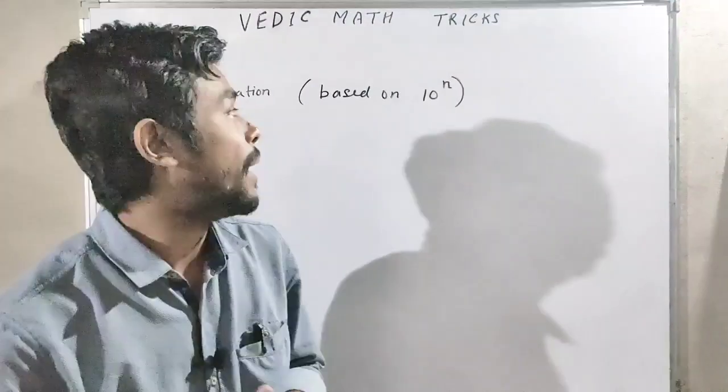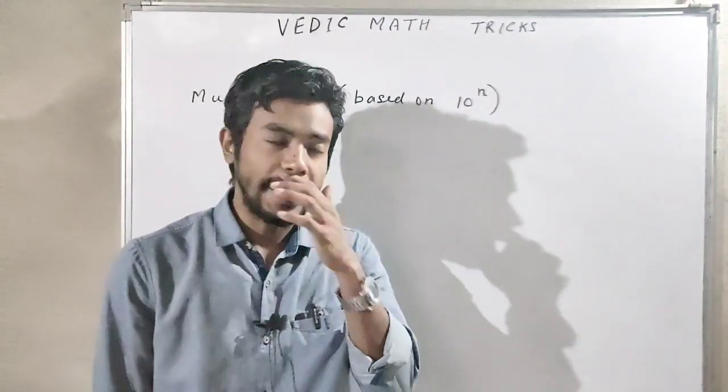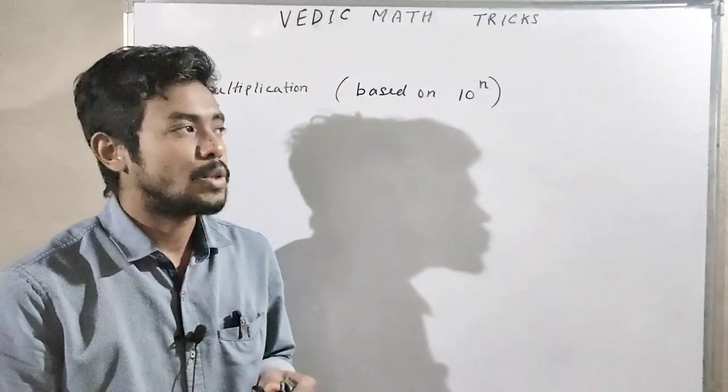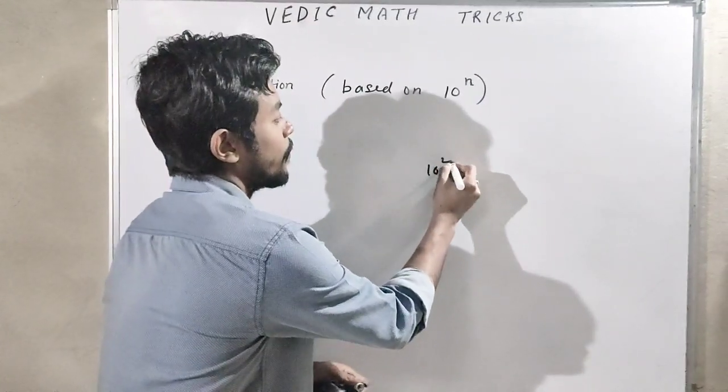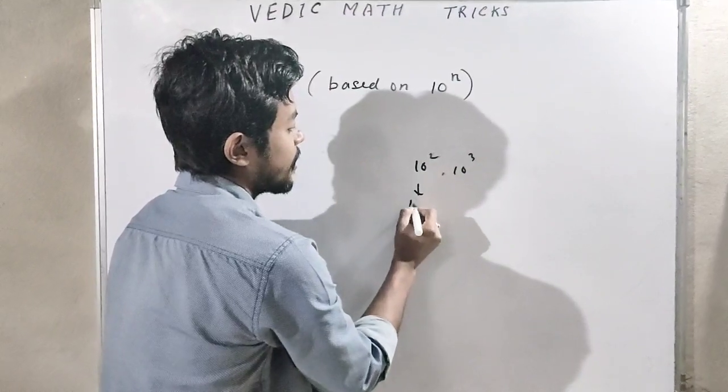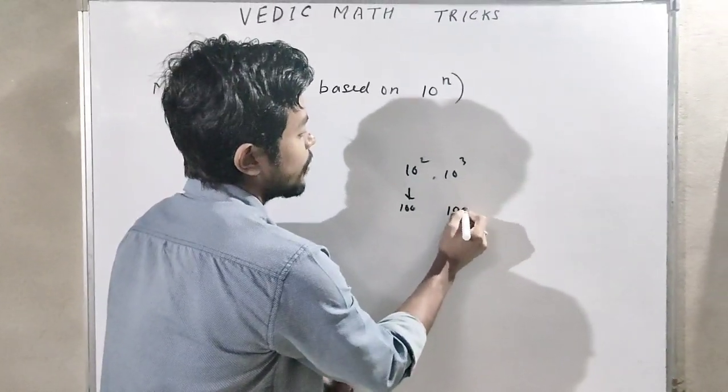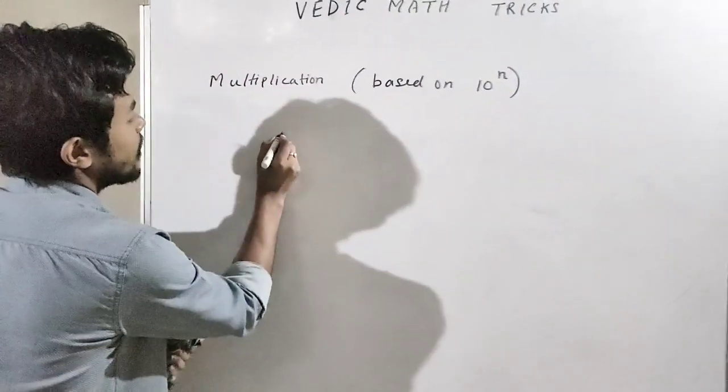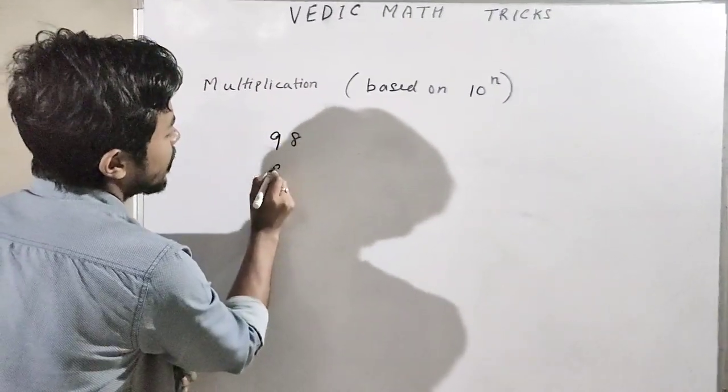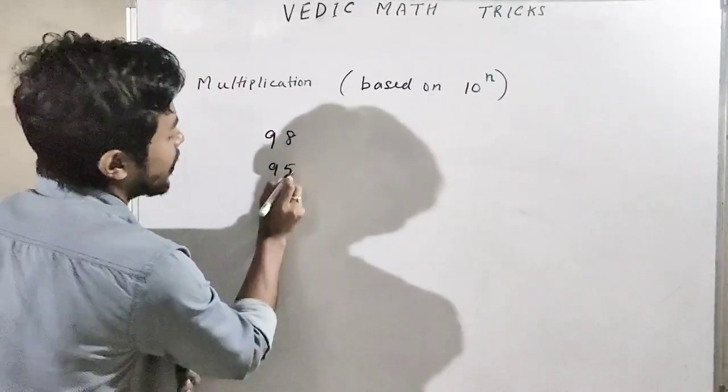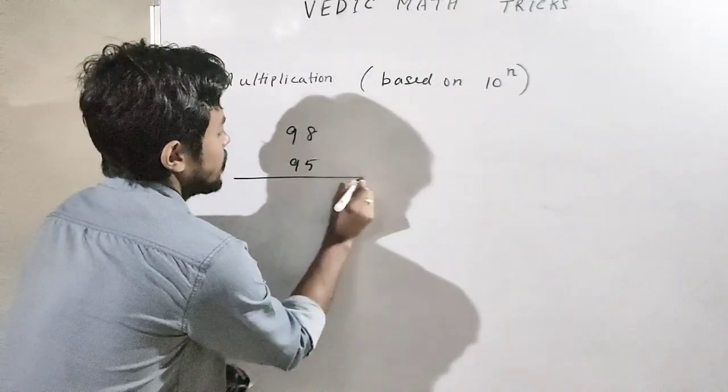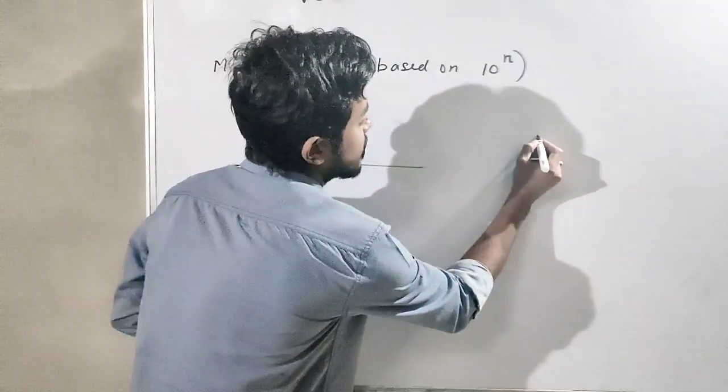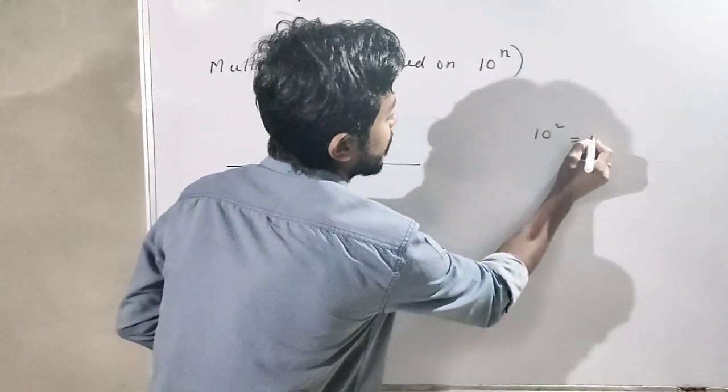Here is trick number 2: multiplication based on 10 to the power n. Here we consider 10 squared, 10 cubed. 10 square means 100, 10 cube means 1000 as base. Suppose we are going to multiply 98 by 95.